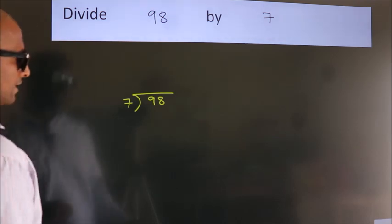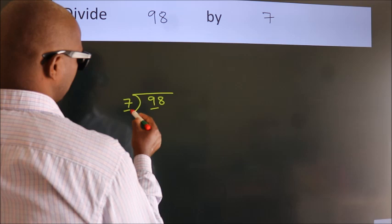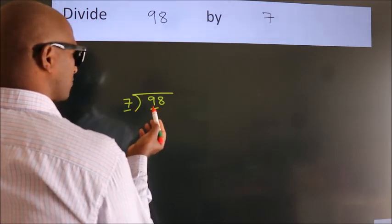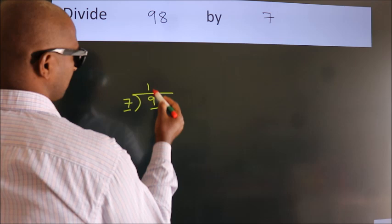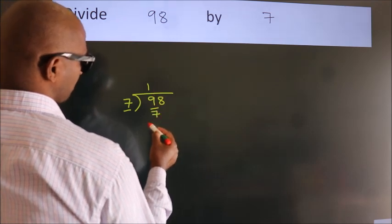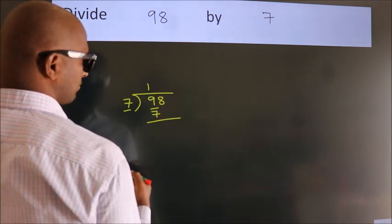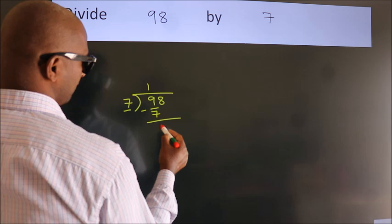Next, here we have 9, here 7. A number close to 9 in the 7 table is 7. Then once 7. Now we should subtract. We get 2.